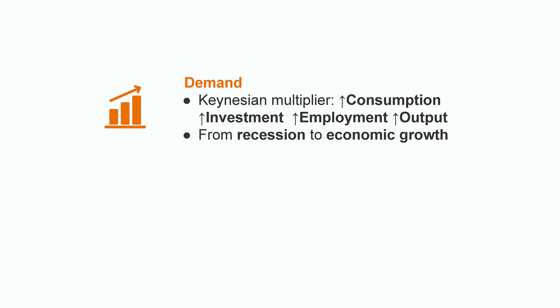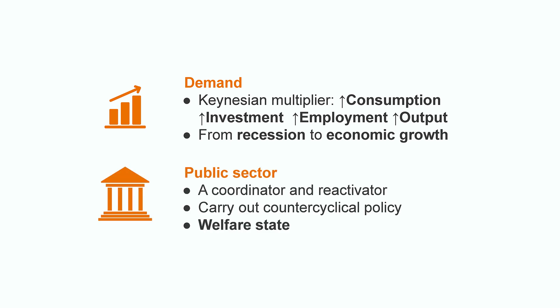First, demand stimulation. Considering that production levels were already higher, economies detected the importance of promoting aggregate demand as a driver of the economy. This has to do with the Keynesian multiplier, which explains how impacts on demand translate to other variables such as investment, employment, and output. According to Keynes, this factor is key for turning an economic recession into economic growth. The public sector, in Keynesian theory, occupies the role of coordinator and reactivator. According to Keynes, it is the only economic agent capable of carrying out a counter-cyclical policy — expansionary policies in times of recession. This was the birth of what we know as the welfare state.